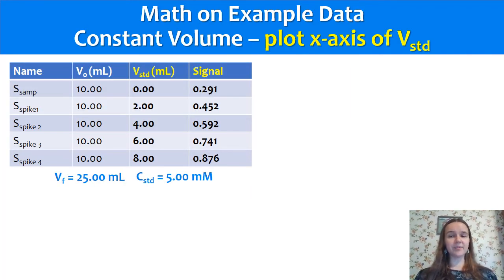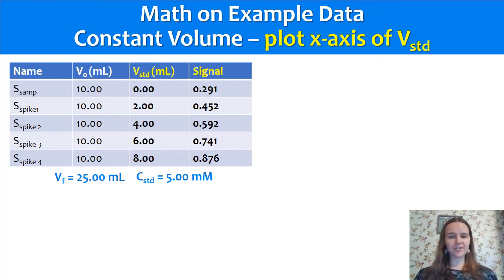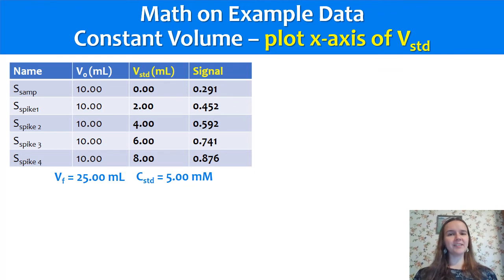There are two ways to plot this data and come to the answer. The first way is to plot the volume of standard added versus the signal. Here's the table with volumes of standard in 2-milliliter increments — always including the sample with no standard added — and the signals measured. These can be five separate samples made and measured; you don't have to go in sequence since they're separate solutions. They all reach a final volume of 25 milliliters, so use a 25 milliliter volumetric flask, add 10 mils of initial sample to all using a 10 mil pipette, add standard using volumetric pipettes, then dilute to 25 mils using distilled water. That way they all have the same total volume — constant volume standard additions — and the same matrix.